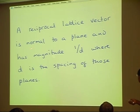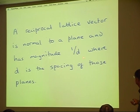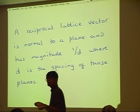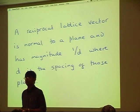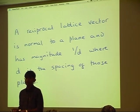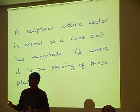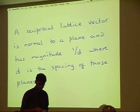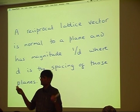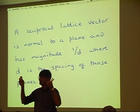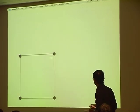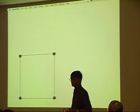A reciprocal lattice vector is normal to a plane and has a magnitude of 1/d, where d is the spacing of those planes. We've now finished a major part of crystallography: we've defined the unit cell, we know how to refer to directions and to planes, and we've covered the concept of the reciprocal lattice. So far we've only defined things — we haven't talked about crystals yet. Lattice points don't exist; they are simply imaginary points in space.